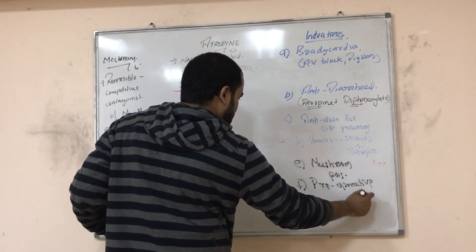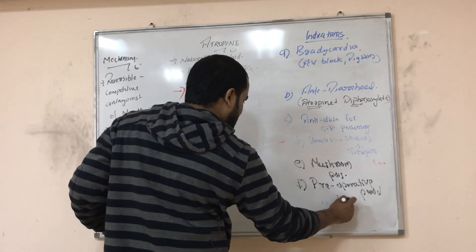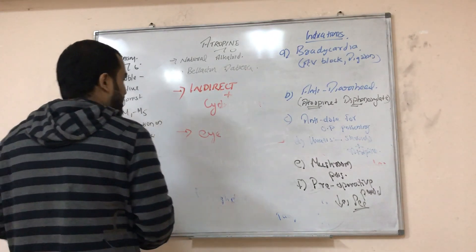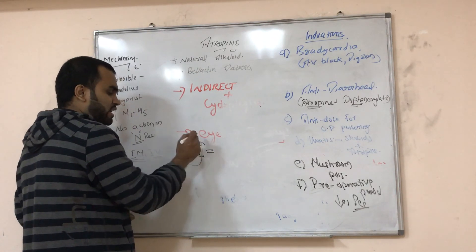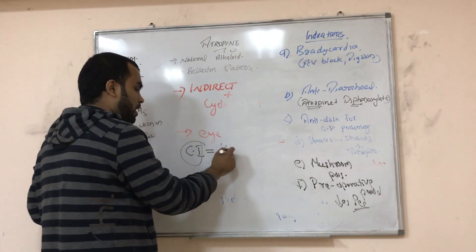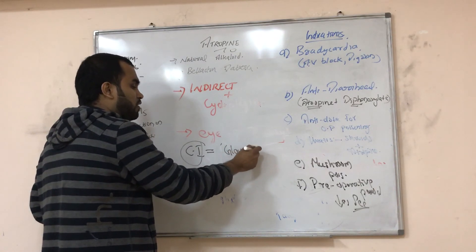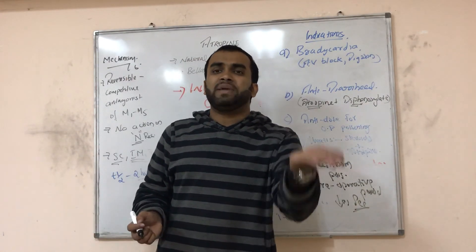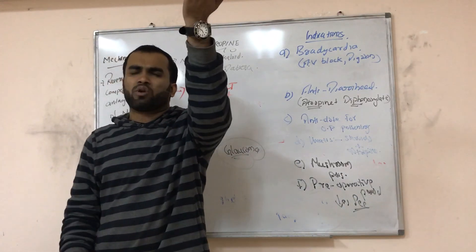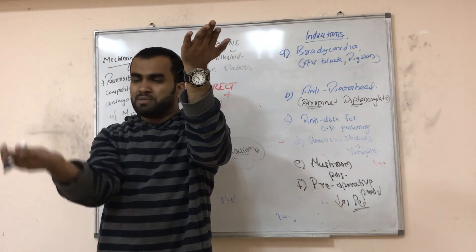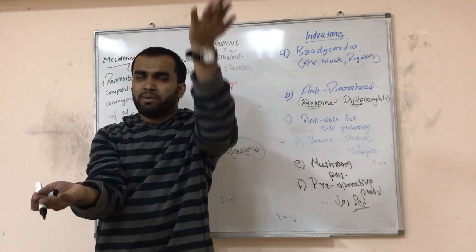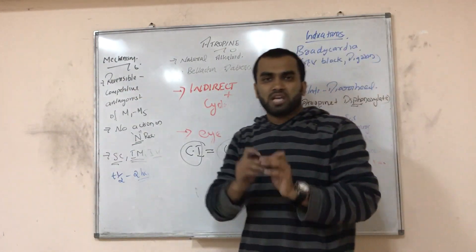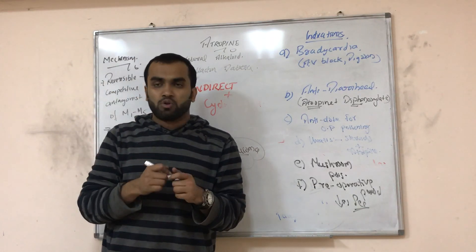Atropine decreases secretion, which is why it is useful pre-operatively. Importantly, atropine is contraindicated in glaucoma. In glaucoma, there is already more aqueous humor produced due to increased sympathetic activity in the ciliary muscles. If you block the parasympathetic further with atropine, it makes the condition worse. So we never give atropine in glaucoma.